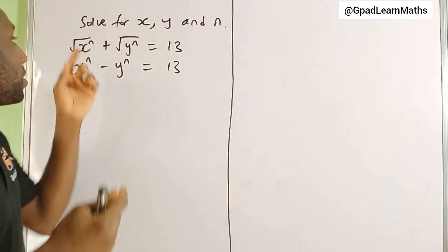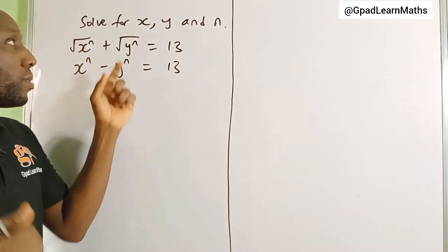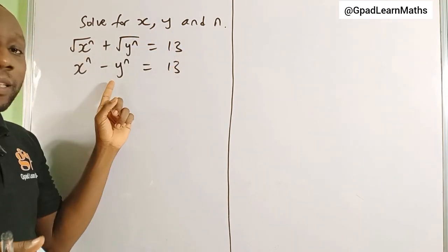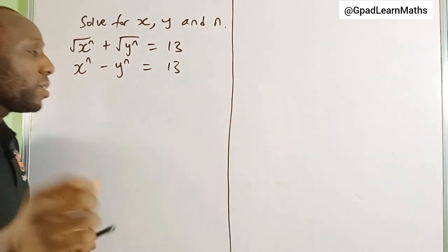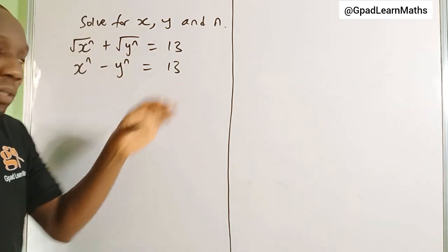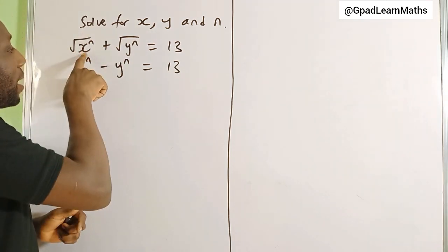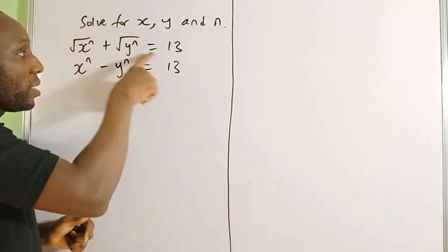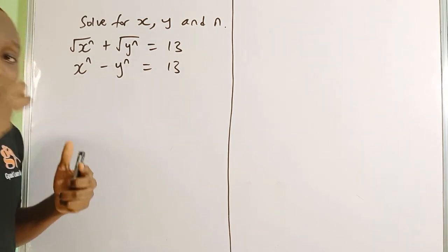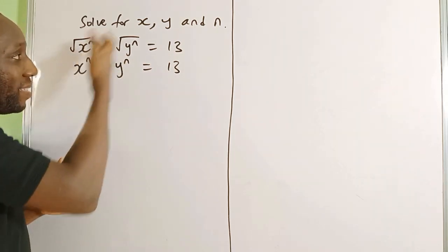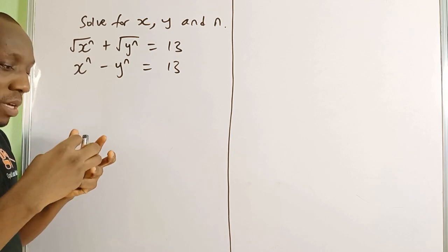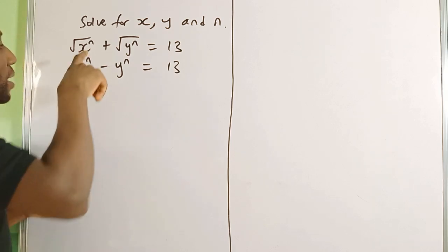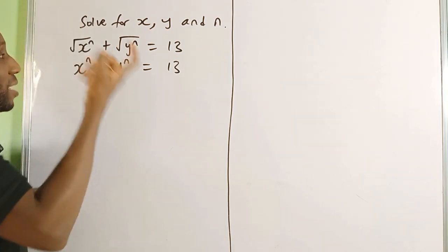Hello friends, let's solve this simultaneous equation for x, y, and n. The question is: the square root of x raised by n, plus the square root of y raised by n, is equal to 13. Is there a way I can transfer this equation to a quadratic equation? I think that's possible.